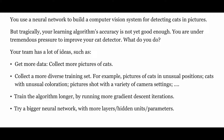Your team has lots of ideas such as: get more data — collect more pictures of cats. Getting more data is usually a good idea. Collect a more diverse training set, for example cats in unusual positions, cats with unusual coloration, pictures shot with a variety of camera settings — professionally shot photos, camera phone photos with blur, cats upside down, cats laying down rather than standing up. There are so many different types of pictures of cats that you want your algorithm to detect.